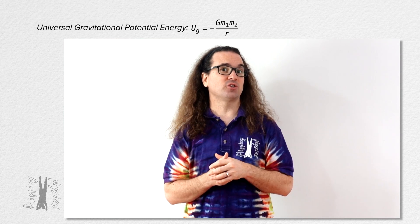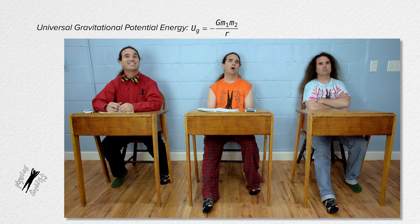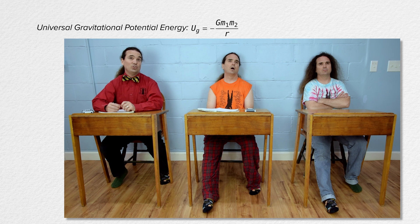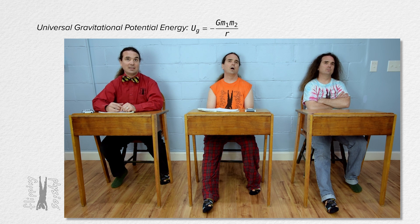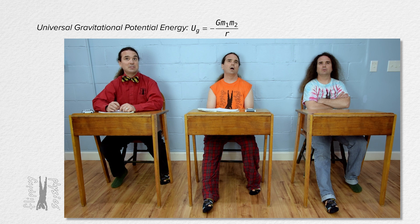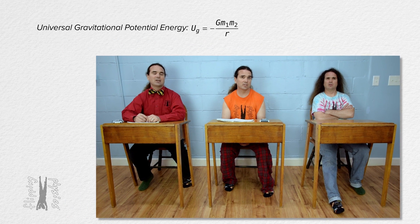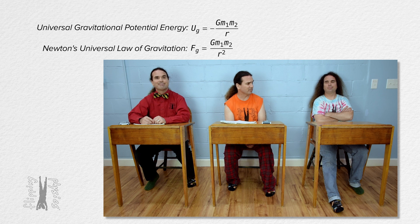Please read the universal gravitational potential energy equation. The universal gravitational potential energy which exists between two masses equals the negative of the universal gravitational constant times mass 1 times mass 2, all divided by the distance between the centers of mass of the two masses. Isn't the distance r squared in this equation? You're confusing this with Newton's universal law of gravitation.